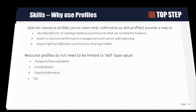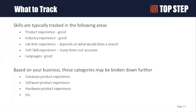As we talk about skill profiles, what I typically see tracked are things like product experience. For example, if you're a services firm that does Oracle consulting, what type of Oracle products can you support? Industries are also very good for services — like being skilled in working with creative agencies, consulting firms, and software product companies, but not as strong with organizations like the Department of Energy. Product experience and industry experience are very good things to track.